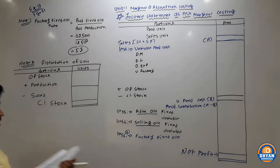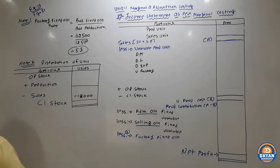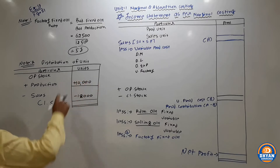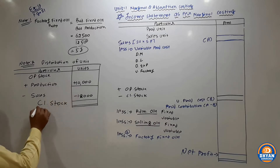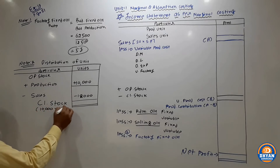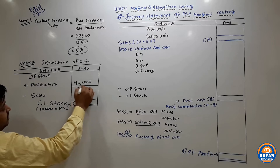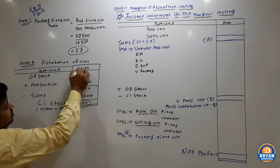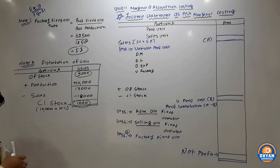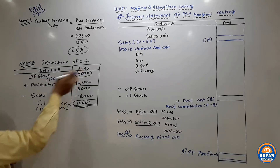Note 2: Distribution of Units. Sales = 12,000 units. Production = 10,000 units. Closing stock = 10% of production = 10% × 10,000 = 1,000 units. To verify opening stock: opening stock = 25% of sales = 25% × 12,000 = 3,000 units. Check: Production + Opening − Closing = Sales → 10,000 + 3,000 − 1,000 = 12,000. Confirmed.